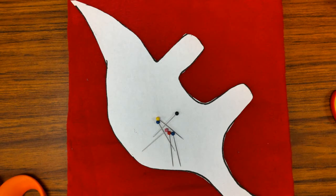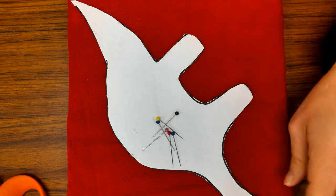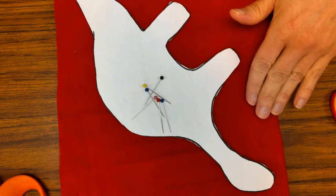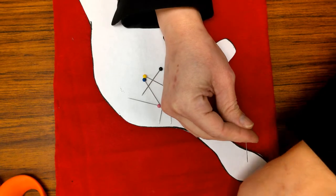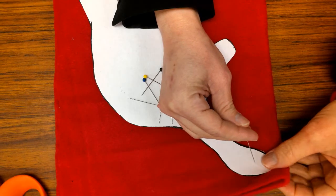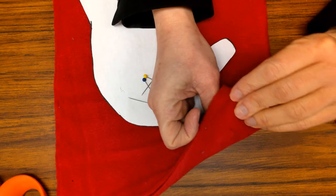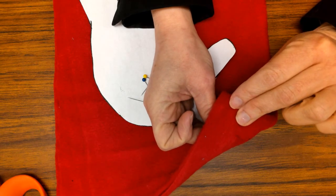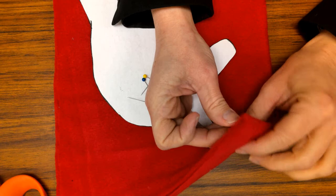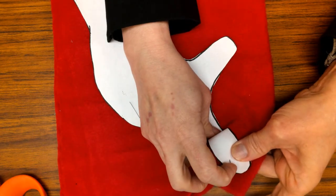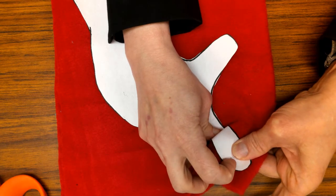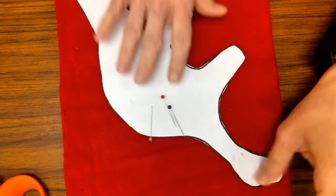I do not want the pattern to move while I'm trying to cut it out. So to pin it, I'm going to start up here on the head, right? And I am going to poke my pin all the way through so that I can see the pin coming out on the back side. And then I'm going to push that pin up so that I can see the sharp end on the front side, just like that.